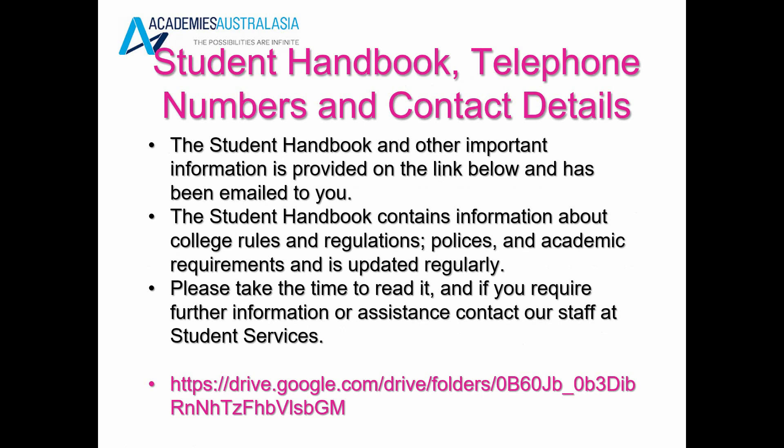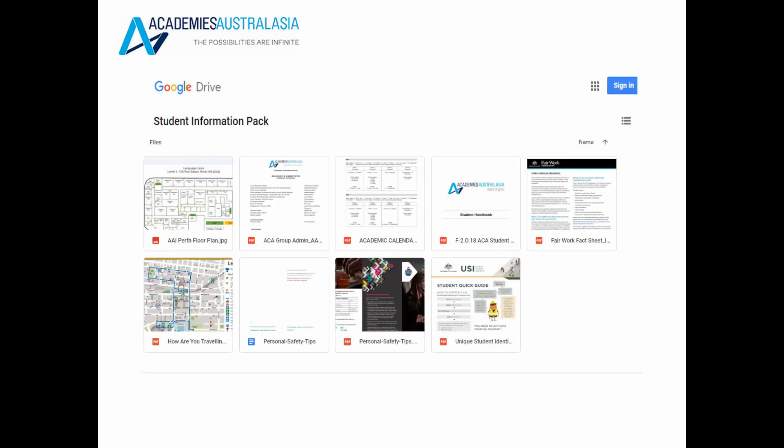The student handbook, telephone numbers and contact details: the student handbook and other important information is provided on the link below and has been emailed to you. The student handbook contains information about college rules and regulations, policies and academic requirements and is updated regularly. Take the time to read it, and if you require further information or assistance, contact our staff at student services. You will receive a student information pack with more details and instructions.